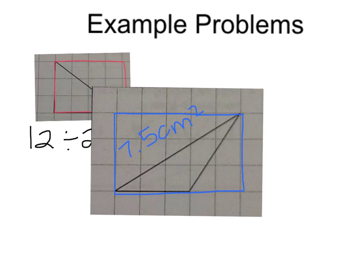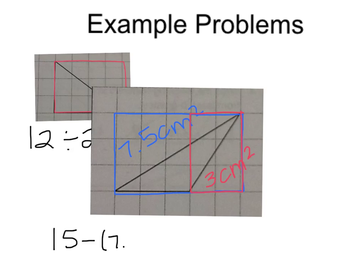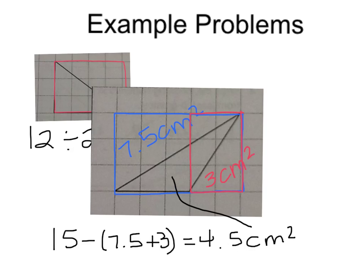Next, we're going to draw one more rectangle using the vertex of this triangle as the vertex of the rectangle. This rectangle has an area of six centimeters squared because there are six squares inside the rectangle. This part of the rectangle, which is a right triangle, has an area of three centimeters squared. Since the total area of the entire rectangle is fifteen centimeters squared, I am going to take fifteen and subtract seven point five and three. Our final answer will be four point five centimeters squared — so this triangle, our original triangle, has an area of four point five centimeters squared.